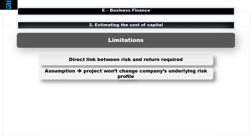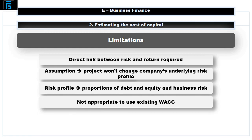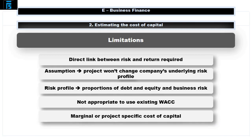This assumes that there are two sources of finance: one equity and one debt. However, any number of sources can be accommodated by applying the above logic — i.e., the cost multiplied by the proportion of the total represented by the source under consideration. Limitations of the WACC: as discussed, there is a direct link between the risk faced by investors and the return required by them.